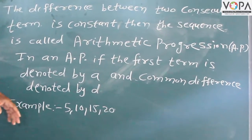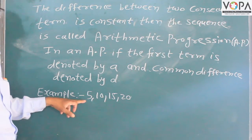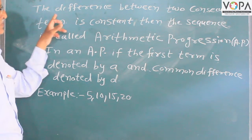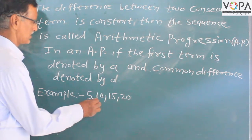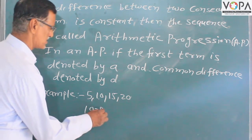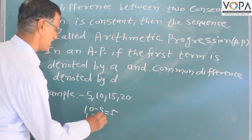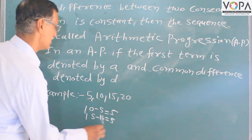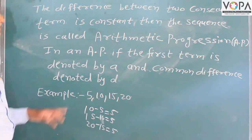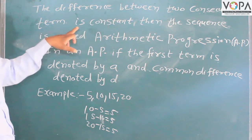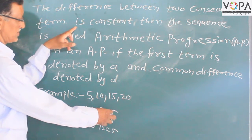Another example: 5, 10, 15, 20. The difference between two consecutive terms: 10 minus 5 is equal to 5, 15 minus 10 is equal to 5, 20 minus 15 is equal to 5. The difference between two consecutive terms is constant — that is 5.